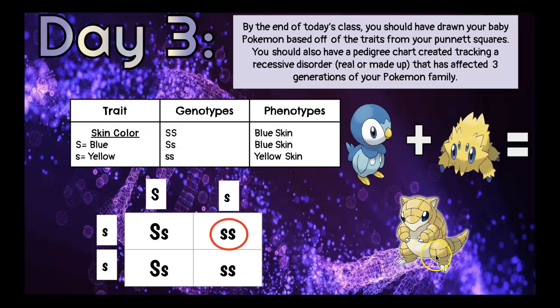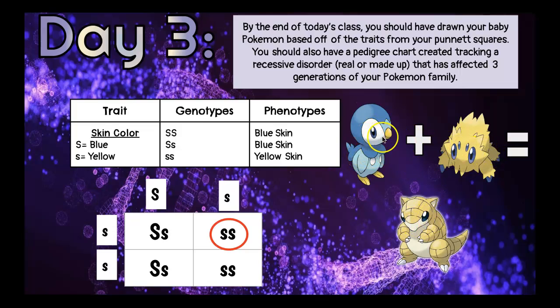You can see it's yellow, just like that parent, so you can tell it got the trait from that parent. When you draw your Pokemon, as long as you've covered the five traits, you can do whatever else you want. So, let's say that for your Pokemon you did not do eye shape as one of your traits — then you can give your Pokemon whichever eye shape you want. As far as the extra traits go, have fun. Do whatever you want to make your Pokemon look creative.